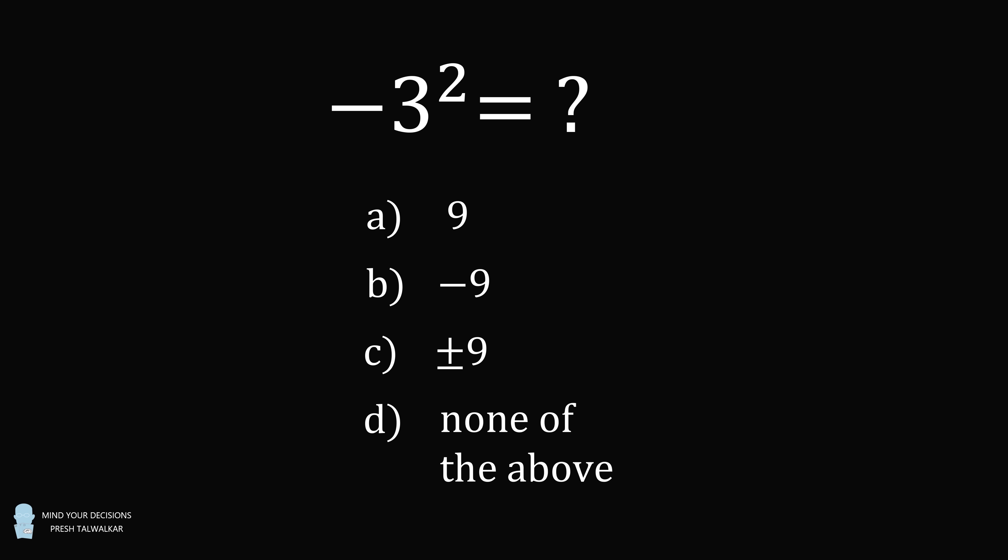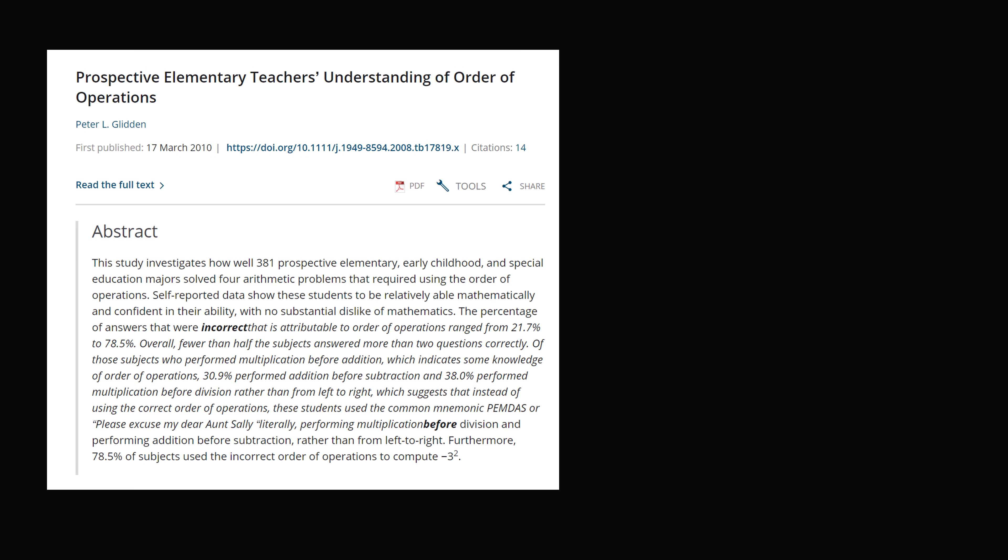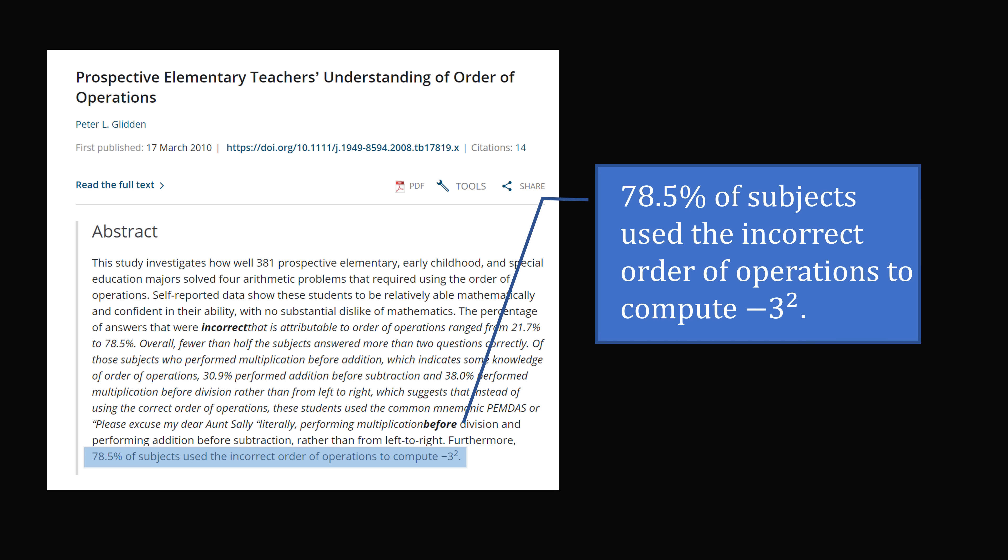Now you may think this is a very simple problem that 100% of people would get the correct answer. But here's a little bit of context. I found a research paper by Peter Glidden titled Prospective Elementary Teachers' Understanding of Order of Operations. According to the abstract, 78.5% of subjects use the incorrect order of operations to compute the opposite of 3 squared.